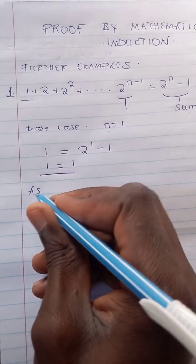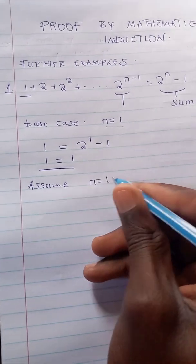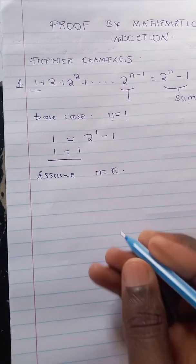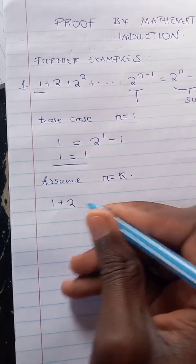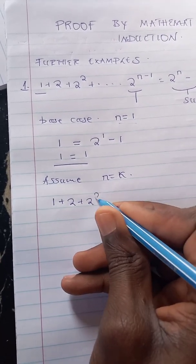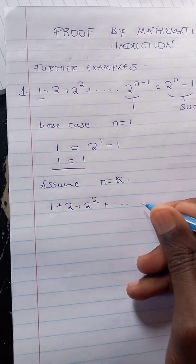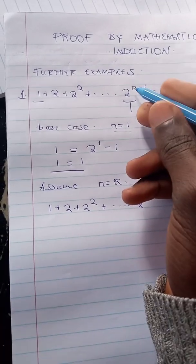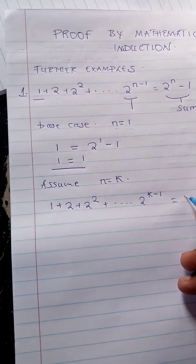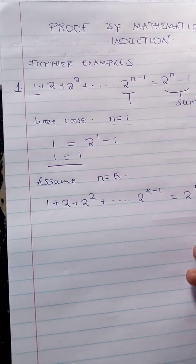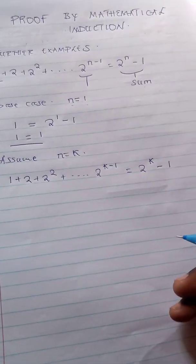We'll assume that n is equal to k. If n is equal to k, we're going to have one plus two plus two squared plus dot dot dot plus two to the k minus one, which is equal to two to the k minus one.